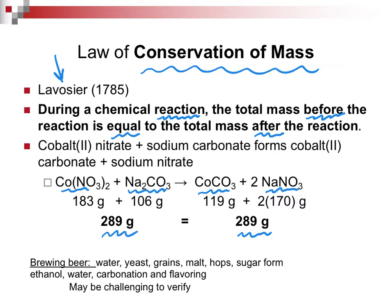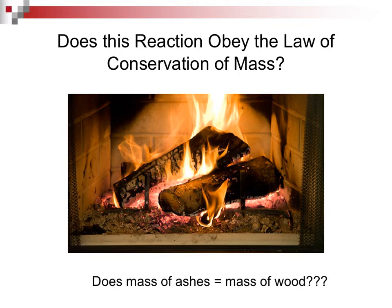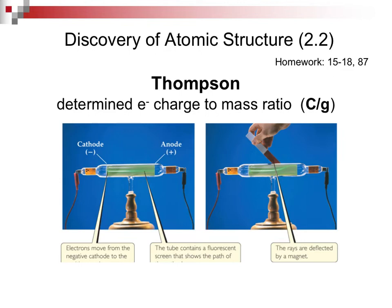Consider the example of brewing beer: carbonation produces gases, making a mass balance very hard to do. Another example — if you have logs burning in a fireplace, are the ashes going to equal the mass of the wood you started with? The answer is no, because you must add the mass of all the gases produced. Conservation of mass always holds when you account for everything.